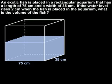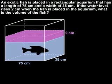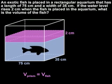The important idea to understand in this problem is that when the fish is placed in the aquarium, the rise in water level creates a right rectangular prism, shown in purple, that is equal to the volume of the fish. So to find the volume of the fish, all we have to do is find the volume of the prism formed by the rise in the water level.